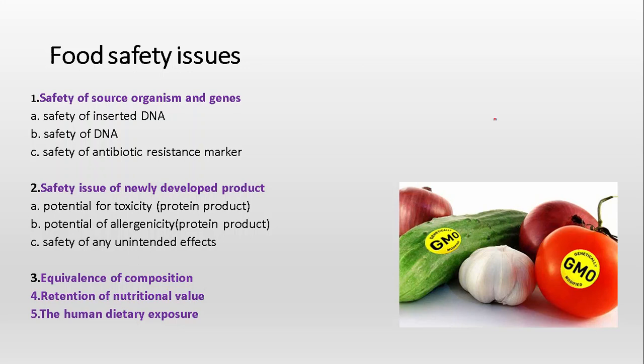The second food safety issue is the safety of newly developed products. When we develop a new product, we should be careful that the product should not be toxic or change its composition when formed in a new body or a new crop. The first concern here is the potential for toxicity — we must check that the product is not toxic while entering the body through food or after digestion.